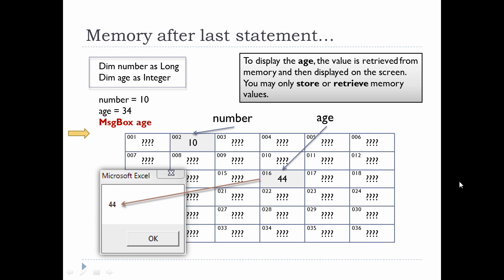34 plus number is a retrieval and then message box age has to do a retrieval. So essentially just keep in mind that you can only store or retrieve values from memory.